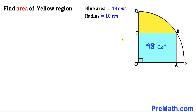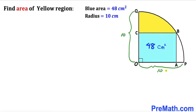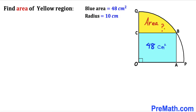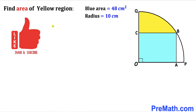Welcome to PreMath. In this video we have a blue rectangle OABC fully inscribed in a quarter circle, such that the area of the blue rectangle is 48 square centimeters and the radius of the quarter circle is 10 centimeters. Our task is to calculate the area of the yellow shaded region. Please don't forget to give a thumbs up and subscribe.